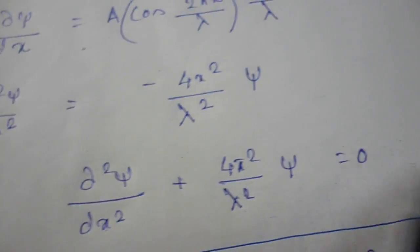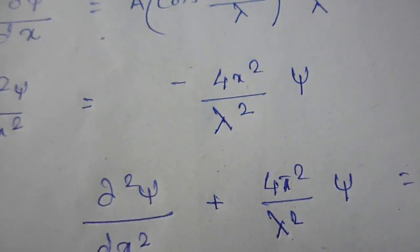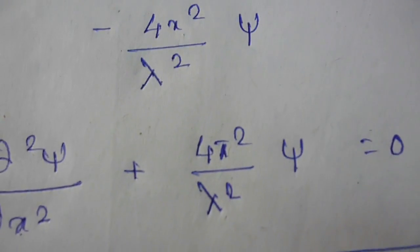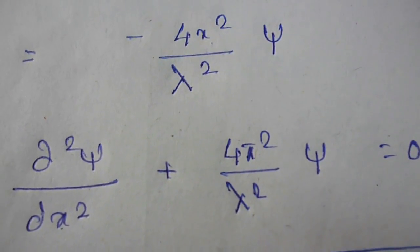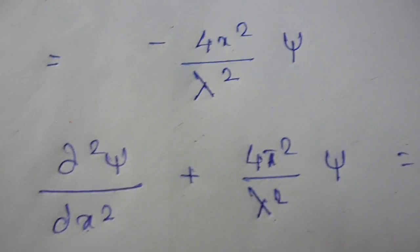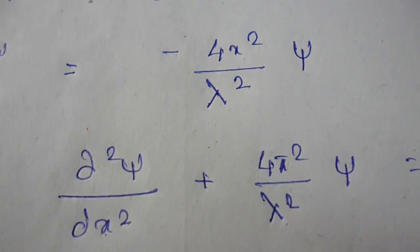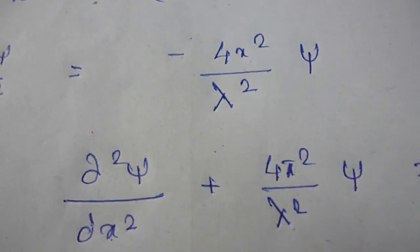That gives us to this final form of equation d²ψ/dx² plus 4π²/lambda² ψ is equal to 0. This is for one dimensional. Now if I take it to the three dimension, let's see what it looks like.